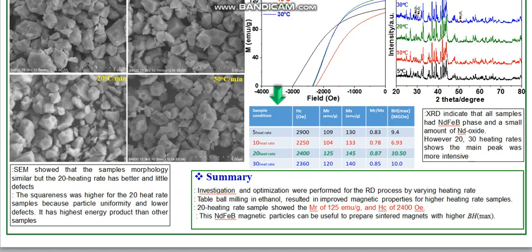In summary, the optimization of the RD process through controlling the heating rate shows that 20 degrees C per minute is the optimal heating rate, achieving the best nucleation and growth control of NdFeB through the RD process and yielding the best magnetic properties. Thank you very much.